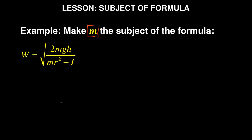The first thing that grabs my attention is that m appears twice in the formula. When you see m appearing twice, one thing you must remember is that factorization will be involved — you're going to perform factorization somehow. Keep that in mind. The other part is just normal algebra.